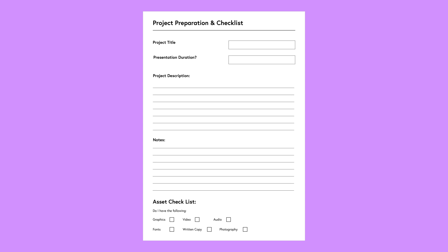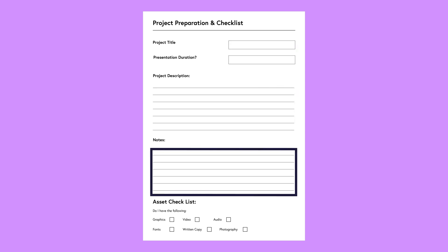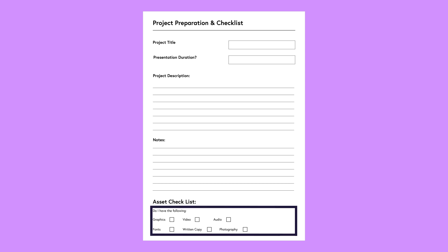Before I start any video project I typically start with step 1: project preparation. This is a quick step I undertake to make sure I have everything I need and have thought everything through. To do this I use a project prep and checklist sheet. First I recap on the project and write a quick project description. I also write any notes I need to keep in mind, then go through an asset list to make sure I have everything I need — such as graphics, video, audio, or any typefaces. I generally don't start any project until I have all these boxes ticked.